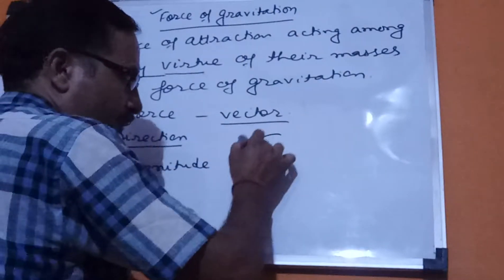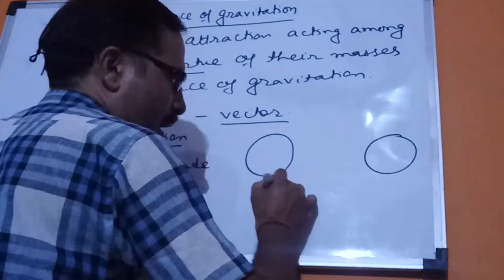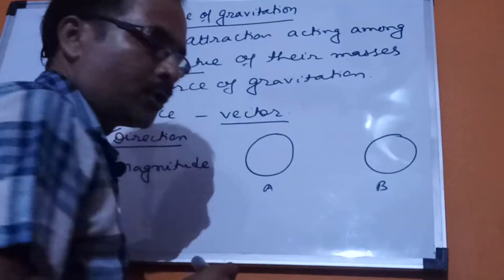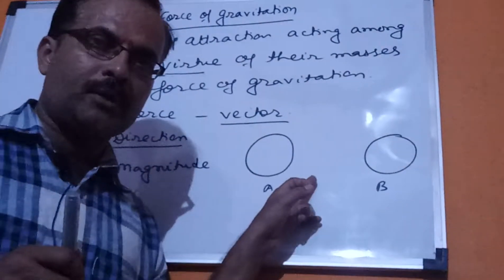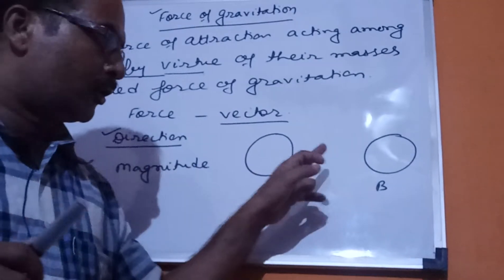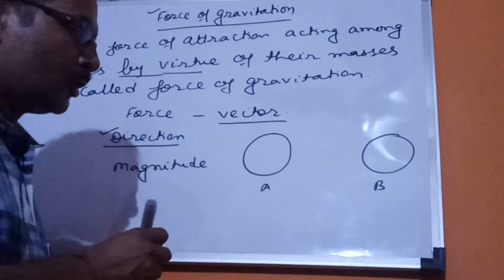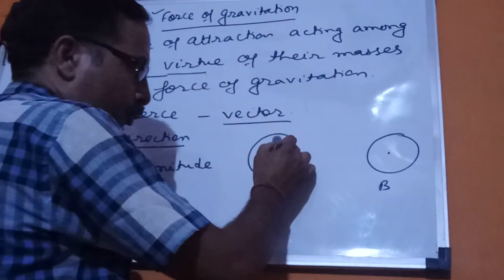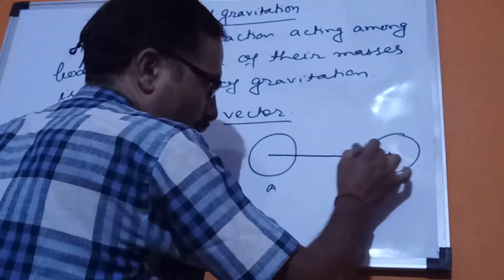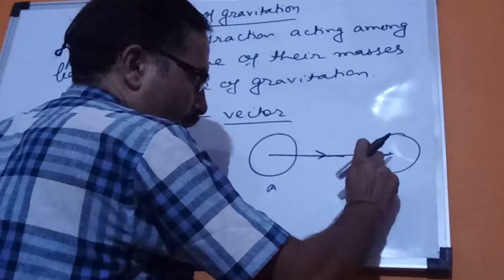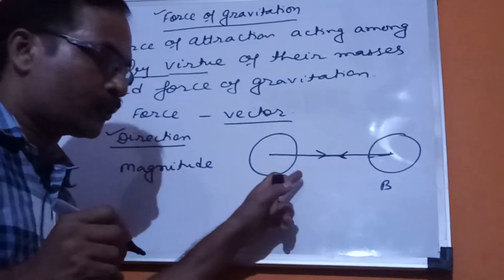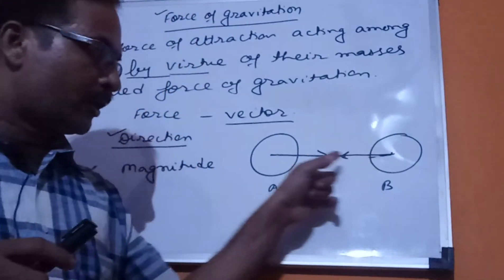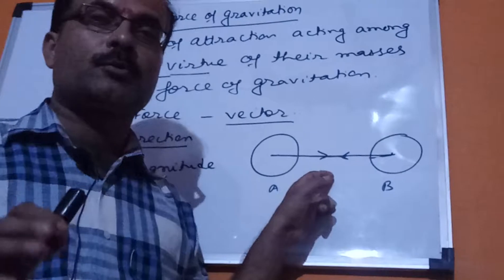Suppose there are two bodies, body A and body B. Both of them have masses, so they attract each other. Body A is attracted by body B and body B is attracted by body A. The direction of the force of gravitation is along the straight line joining the centers of both bodies. That straight line represents the direction of the force of gravitation.